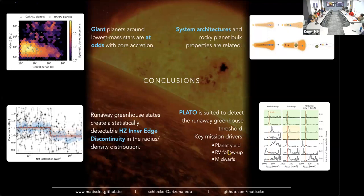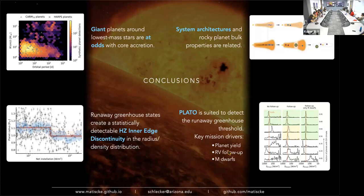Thanks a lot. I'm happy to take questions. Question: in your core accretion model in the first part of the talk, did you include pebble accretion? Because you mentioned there's not enough mass for giant planets—would including pebble accretion provide enough mass? Good question. We have only planetesimal accretion in the Bern model. There is one paper where we did a comparison with pebble accretion only and also with both pebble and planetesimal accretion switched on, around 2020, where you can see the differences.